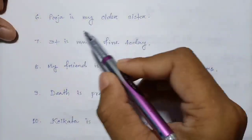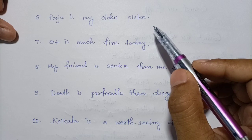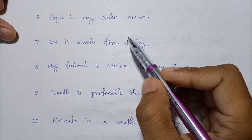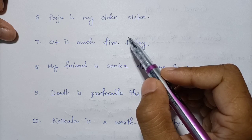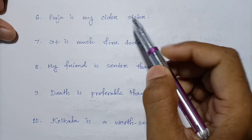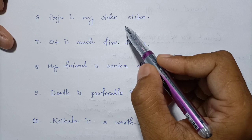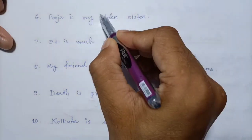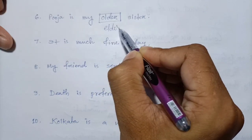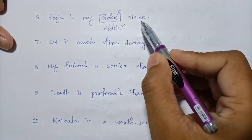Question six: 'Pooja is my older sister.' 'Older' is used only when we compare people belonging to different families. Since Pooja is a family member, 'older' is wrong here. The correct word is 'elder' — 'Pooja is my elder sister.'